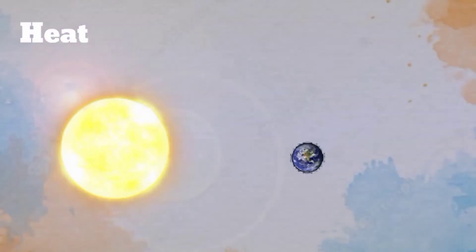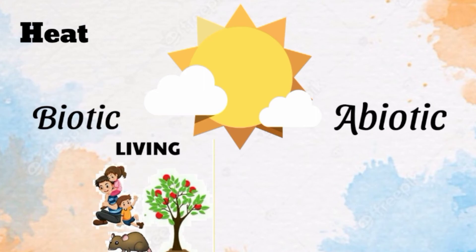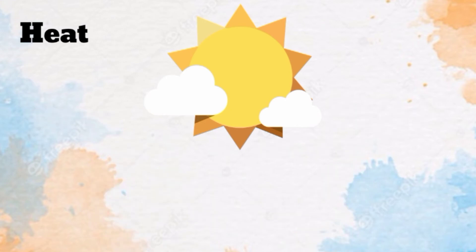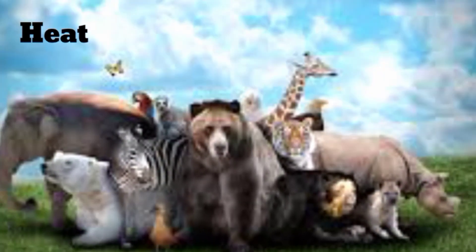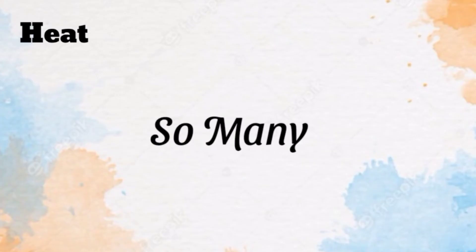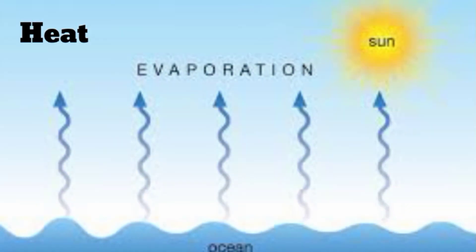Heat brings many uses to the biotic, known as living things, and abiotic, or non-living things, components of our surroundings. As heat is used by animals and plants as the main source of energy, it is also useful in so many things — including the process of evaporation as one of the techniques in separating mixtures.